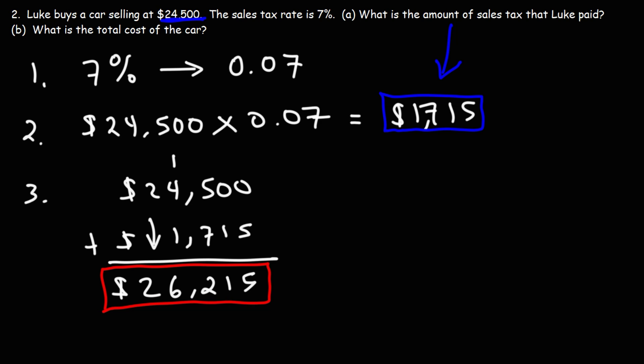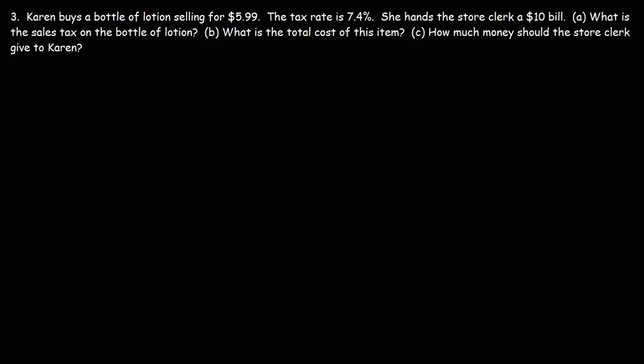So the total price is $26,215. And of course, you could use your calculator to verify that result. So I'd like to double check just to make sure I have the right answer. And this is indeed the right answer. So that's how you can calculate the total cost of the car, as well as the sales tax associated with the purchase. Let's work on one more problem.